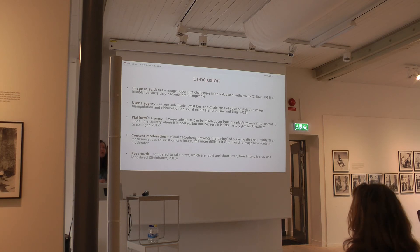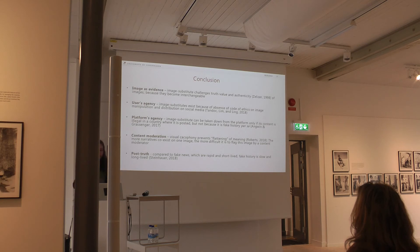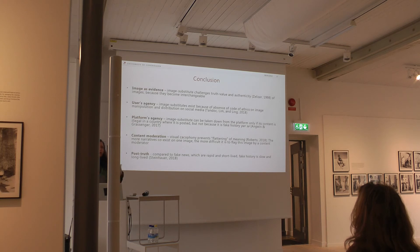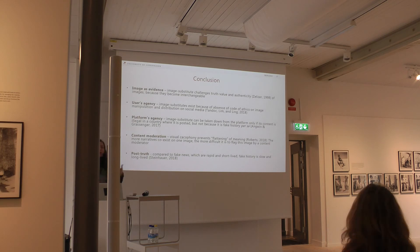The fourth point is content moderation. The problem with visual cacophony — when you have too many narratives in one picture — is that it prevents flattening of meaning. The more narratives you have, the more difficult it is to understand what the picture is about. Content moderation is normally outsourced abroad to East Asian countries, and the underpaid content moderator, working in semi-clandestine conditions, has only ten seconds to decide whether they flag a picture. Ten seconds is not enough to understand the historical context of whether it's about Holodomor, the Holocaust, or something else. The more confusion there is, the harder it is for the picture to be removed from the internet.